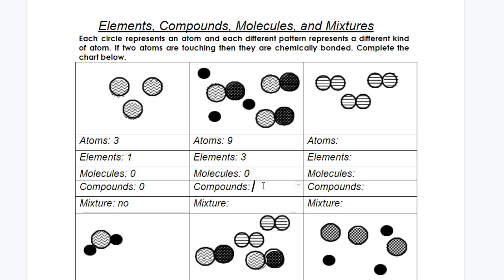Now compounds — how many different atoms bonded together do I have? I have this one, this one, and this one, but I only have one kind because they're all the same, so I'll put in one type. In the compounds column, you're just going to put how many different types of compounds you have. And then is this a mixture of different elements? This one would be yes, because we have all different patterns.